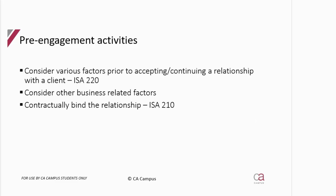The standards relevant to pre-engagement are ISA 220, which is a Level 2 standard, giving the specific steps in accepting and continuing. We also have to consider other business factors not in the auditing standard, as they are general business considerations. Then ISA 210, a Level 3 standard, is relevant because there must be a contract that binds the client and the firm when the engagement is accepted.